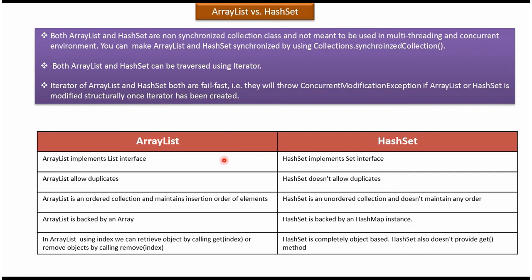Now we will see the difference between ArrayList and HashSet. ArrayList implements the List interface, while HashSet implements the Set interface. ArrayList allows duplicates, whereas HashSet doesn't allow duplicates. ArrayList is an ordered collection and maintains insertion order of elements, while HashSet is an unordered collection and won't maintain any order.